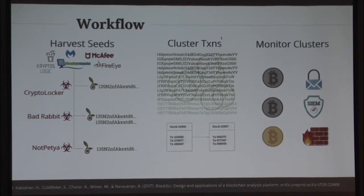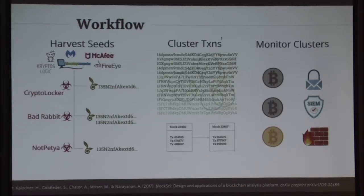We use these seed Bitcoin addresses to build out clusters of Bitcoin addresses. There are several heuristics that are good options for building these clusters. The objective is to approximate a bad actor's wallet — all the addresses they control. From there, we monitor these wallets to assess the actual financial impact: where did the money go, and how can it be related to other indicators in the threat ecosystem.